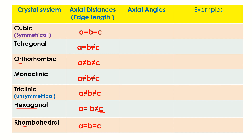The remaining systems — orthorhombic, monoclinic, and triclinic — all have three unequal axial distances: a ≠ b ≠ c, all having different values.